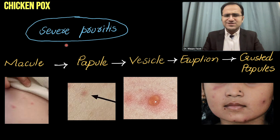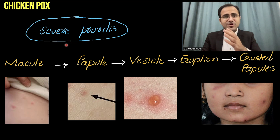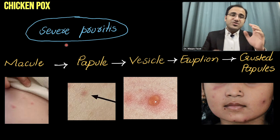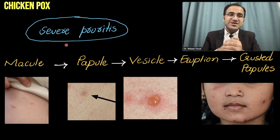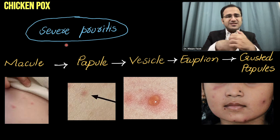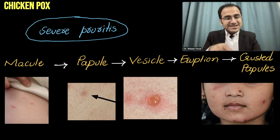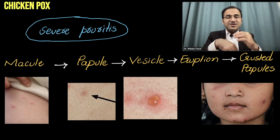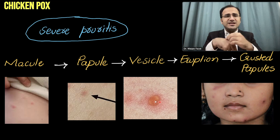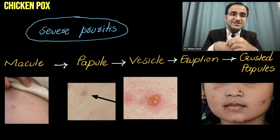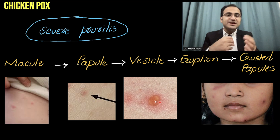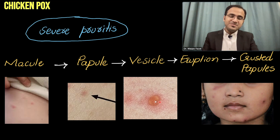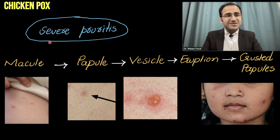There is severe pruritus associated with chickenpox. Pruritus plays a very important role in the complications. If pruritus is not treated properly, the children or adults will try to scratch these lesions. When they scratch these lesions, the natural eruption does not take place, and these lesions erupt prematurely — there is a risk of secondary bacterial infection. So severe pruritus must be treated.